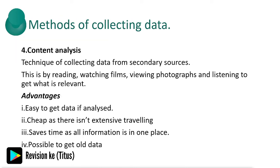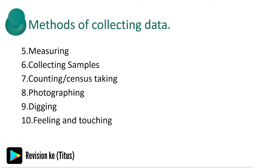Content analysis is the technique of collecting data from secondary sources by reading, watching films, viewing photographs, and listening to get what is relevant. Advantages: it's easy to get data, it's cheap as it avoids extensive traveling, saves time as all information is in one place, and it's possible to get all the data needed. Disadvantages: it's difficult to verify the accuracy of data, data may not be relevant to current trends, and up-to-date data may not be readily available. Other methods include measuring, collecting samples, counting or census taking, photographing, digging, feeling and touching — you can research these or read more in your geography textbook.